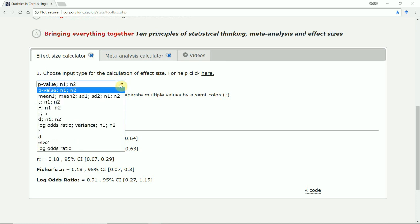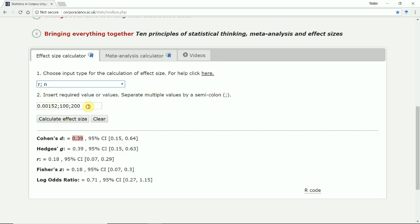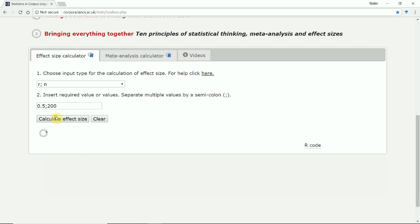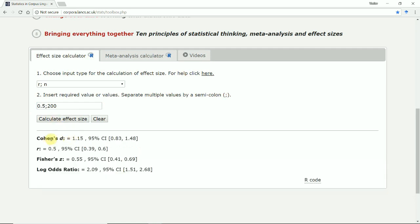We can choose another option. Let's say that we have the R-value, the correlation coefficient, and the size of the corpus in terms of the number of texts. Let's say 0.5, and we have something like 200 different texts, and then we get the equivalent Cohen's D, Fischer's Z, log odds ratio, and also the confidence interval.